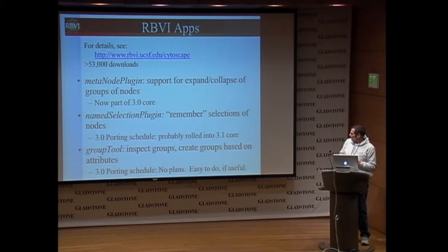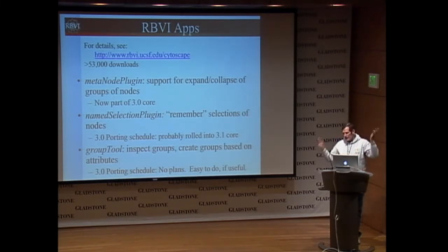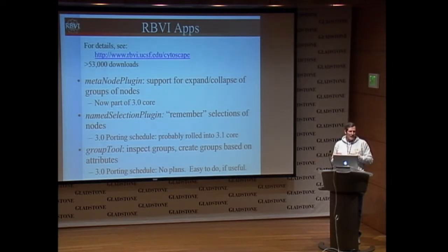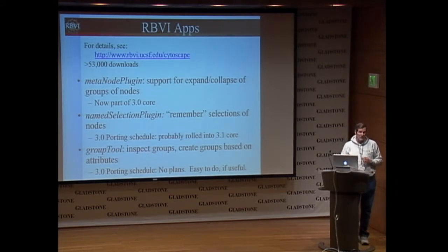Group Tool is another one that if people want it, I'll move it over. It's a tool that allows you to pick an attribute and automatically create MetaNodes based upon that attribute. So if you have a categorized attribute, you can automatically create MetaNodes for it. It's a trivial port, but at this point I don't have specific plans for it.